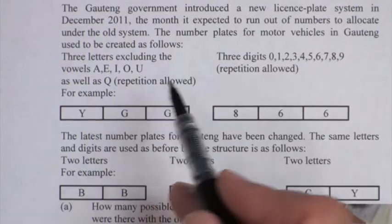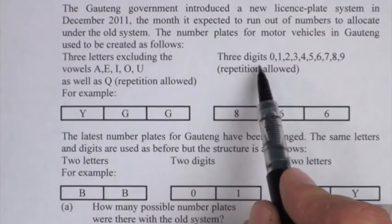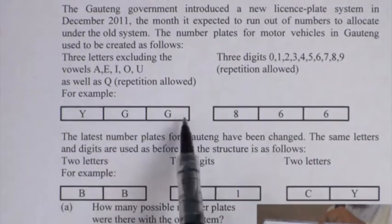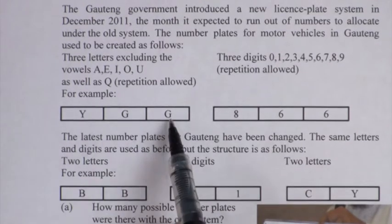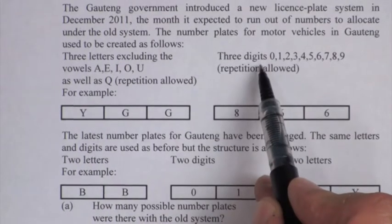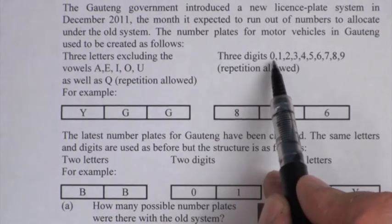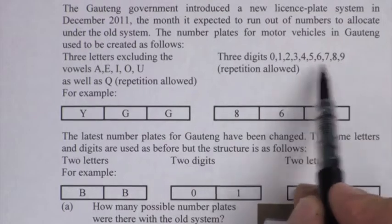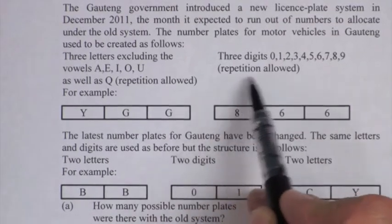And then there are three digits. So as you can see with this little drawing, there are three letters, there are three digits, and the three digits are from the numbers 0, 1, 2, 3, up to 9. And they may also repeat.